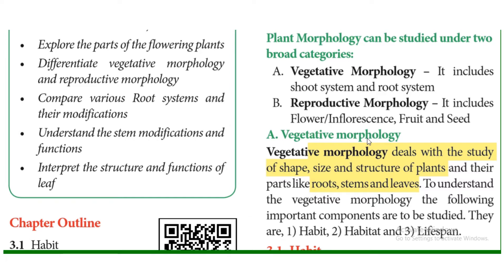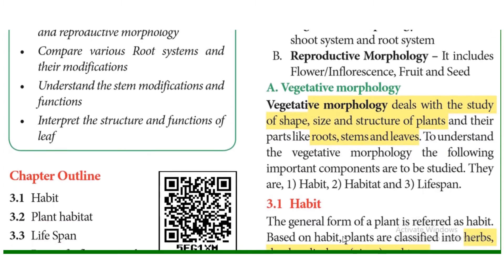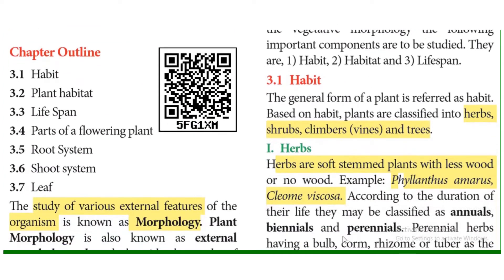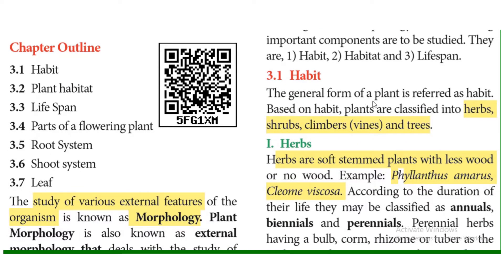Vegetative morphology deals with the vegetative parts of the plant — root, stem, and leaves. We study the shape, size, and structure of these parts. Vegetative morphology includes components such as habit, habitat, and lifespan. The general form of the plant is referred to as its habit.